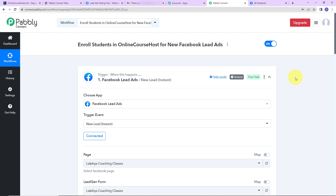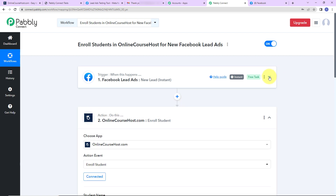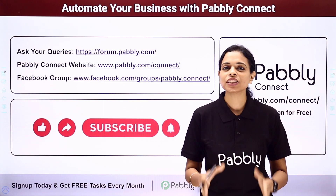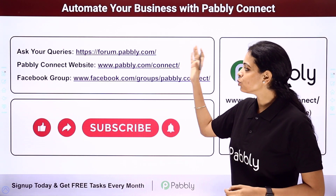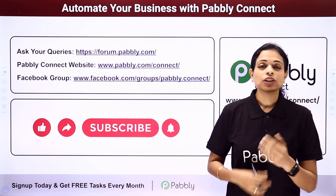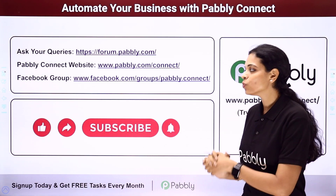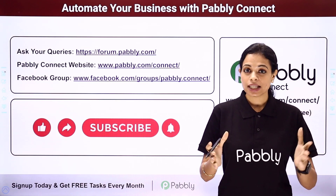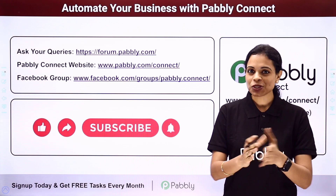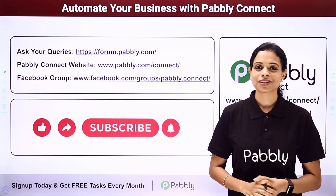Our trigger application was Facebook lead ads with the event new lead, and our action application was onlinecoursehost.com with the event enroll student. If you have any doubts, you can refer to the workflow in the video description and clone it to get started immediately. For specific integrations, write to us at forum.pabbly.com or visit pabbly.com/connect. Join our Facebook group for the latest updates. If you found this video helpful, share it with your friends and colleagues. Like, share, and subscribe — take care!